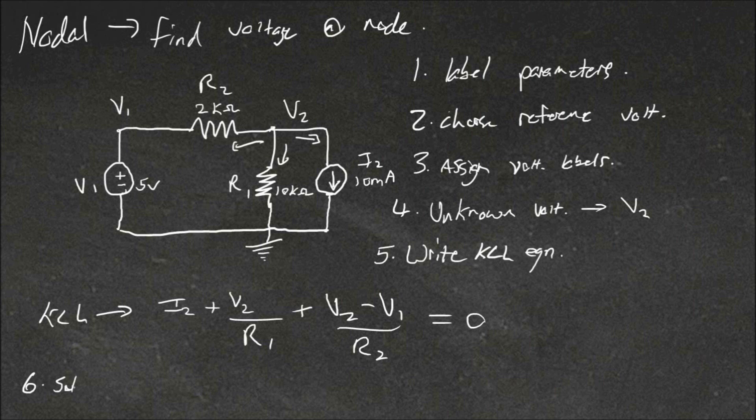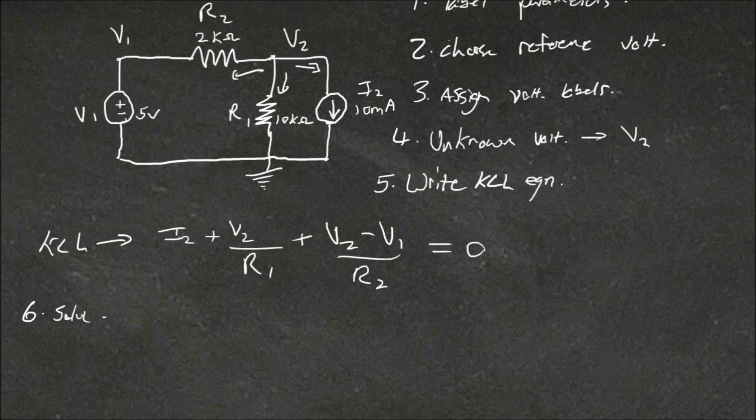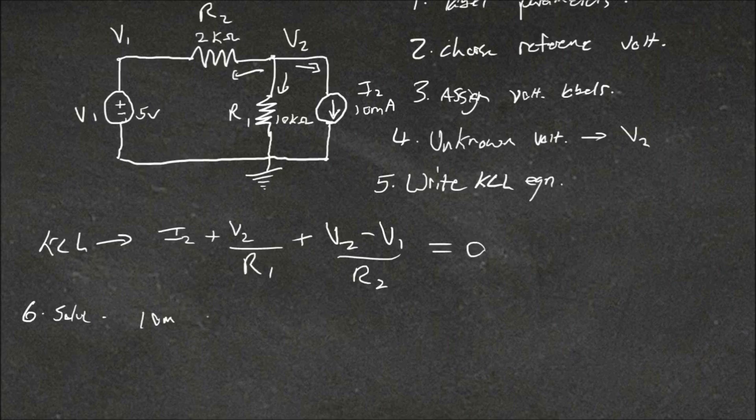So because we have only one unknown voltage, there's only one equation. So step 6 is just to solve. So we'll substitute in our values. We know that I2 is 10 milliamps. So that's 10 milliamps plus V2, we don't know that, divided by R1, that's 10k, plus V2 minus V1. V1 we know, that's 5 volts, divided by R2, which is 2 kilo ohms. And this equals 0.